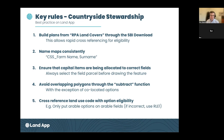If the land use type is incorrect, please use an RLE1 form and officially log that change with the Rural Payment Agency as soon as you can. Even if you think it's arable and they think it's grassland, you need to make sure you're updating it formally through the RLE1 process.